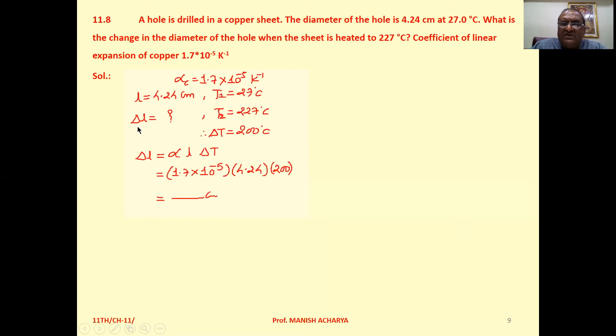We want to calculate the change in length. Change in temperature, that is T2 minus T1, is 227 minus 27, which comes to 200 degrees Celsius.